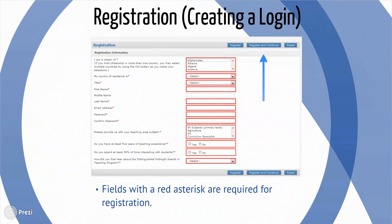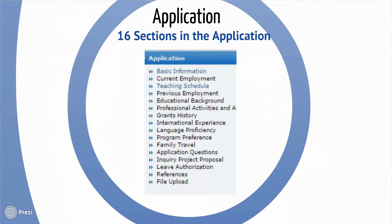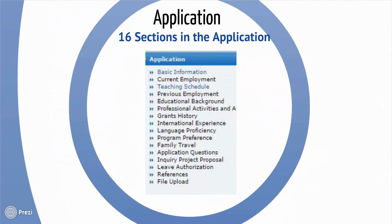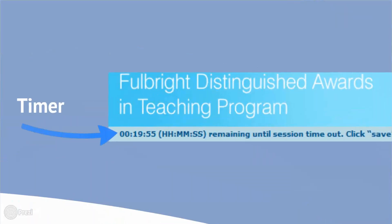When creating a new application, applicants are brought to the registration page. Any fields throughout the application with a red asterisk are required for submission. After registration, the applicant will be taken to the first part of the application. There are 16 sections total. Once you begin the online application, click the Save button often. There is a timer in the top left corner of the application and applicants will be logged out after 20 minutes of inactivity.